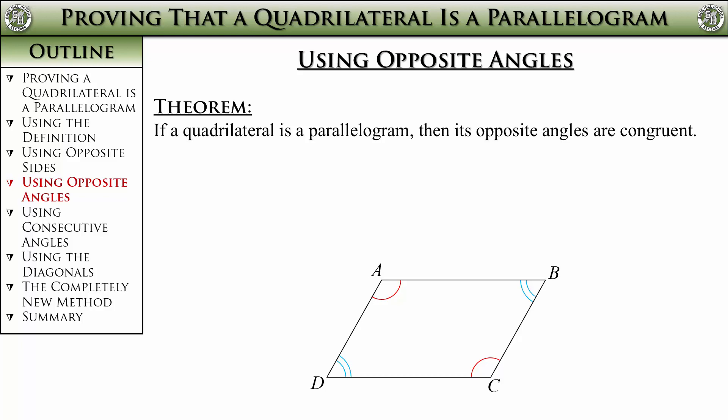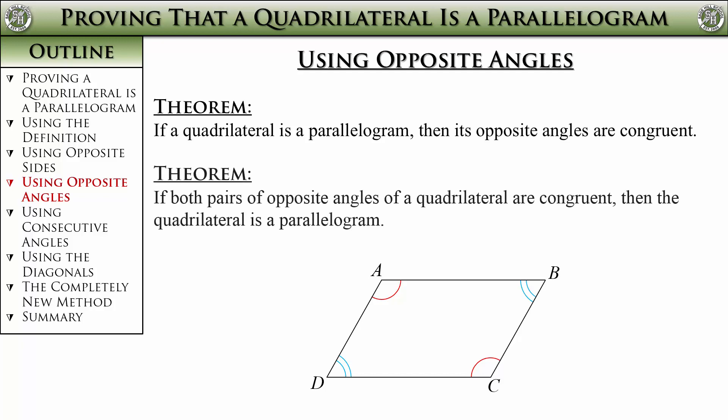Hopefully you start to sense a pattern here. Last time we had this theorem. If we had a parallelogram, then its opposite angles are congruent. Once again, the converse works, and it allows us another way to prove a quadrilateral is a parallelogram. It also needs an abbreviation, so if you haven't been paying attention, you probably don't even need this, but here you go anyways.